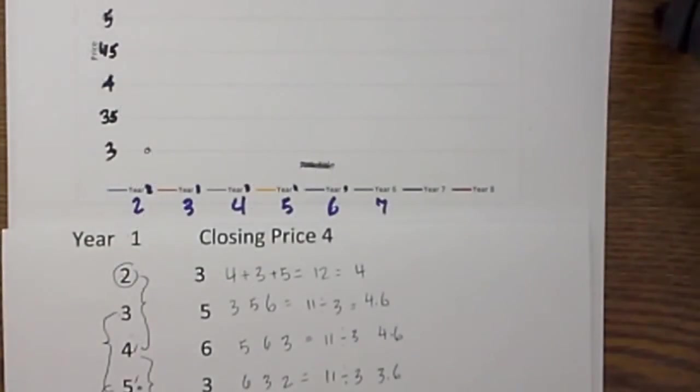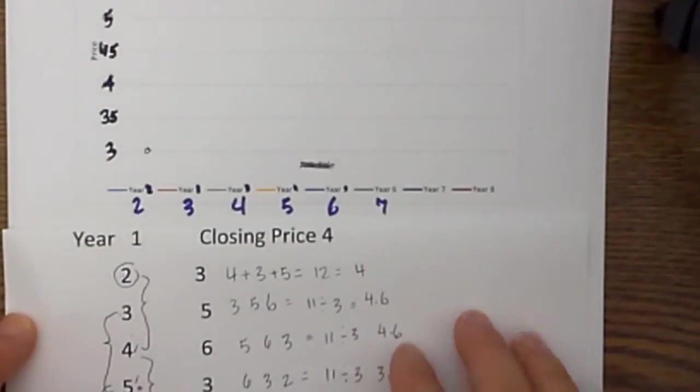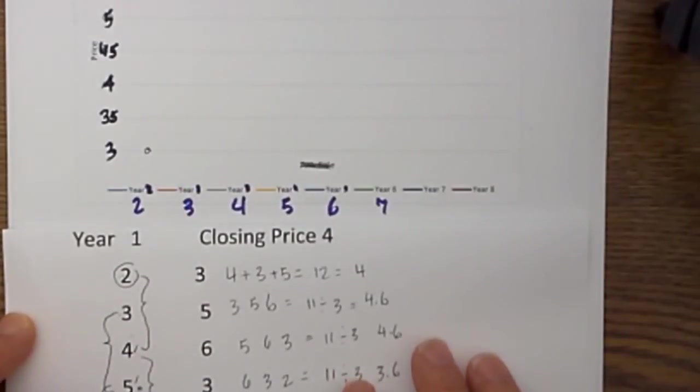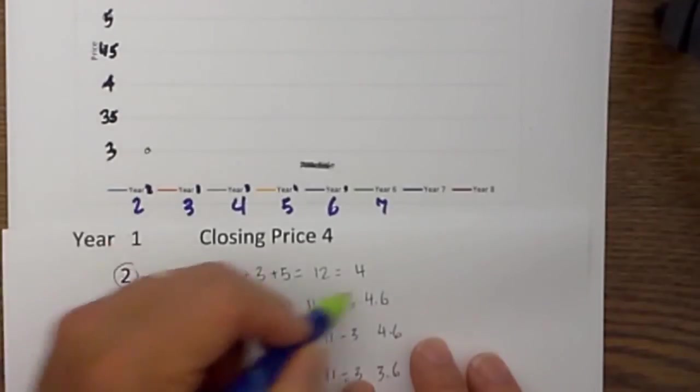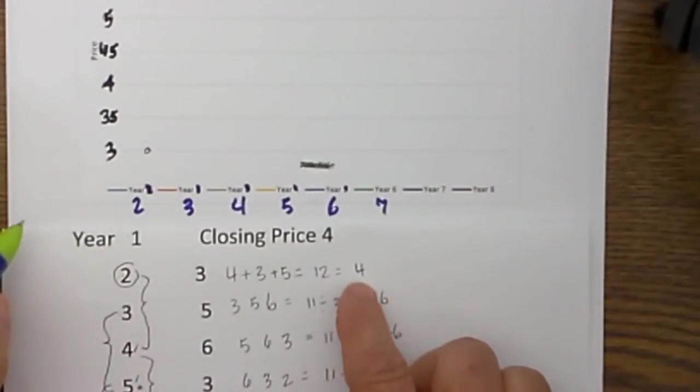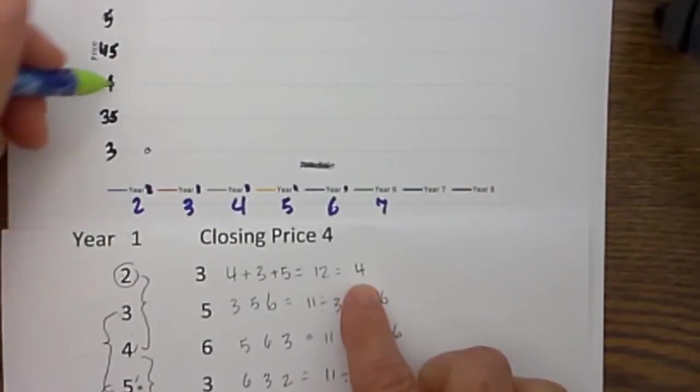Then what you can do next is once you have the moving average calculated, you can plot it onto a graph. In this example I have year 2 and the value is 4, so I will put a dot there.